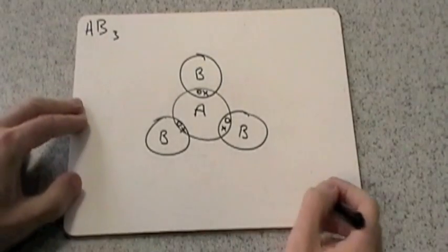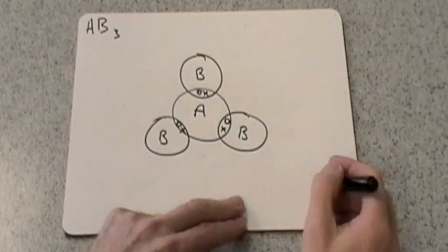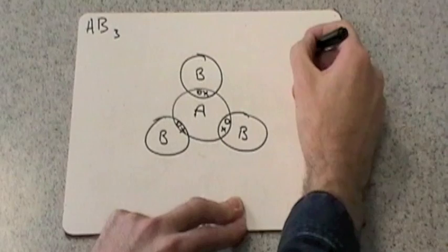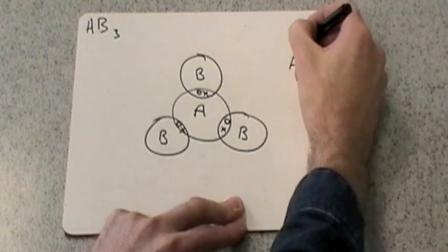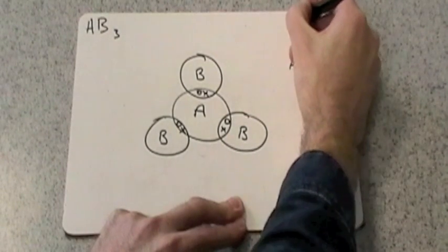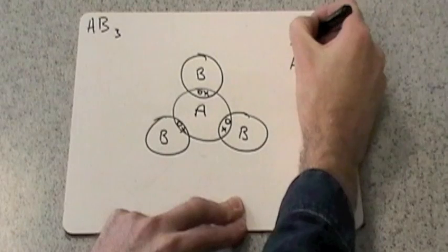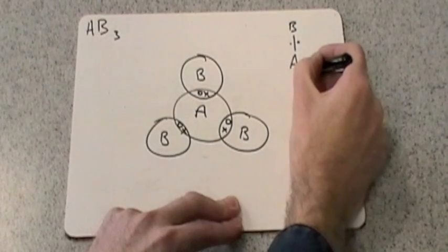And so we would have a molecule that would have this sort of shape. I'll draw it up here. So we have the A in the middle. We have a B up there, there's the pair of electrons in the bond, in the covalent bond.